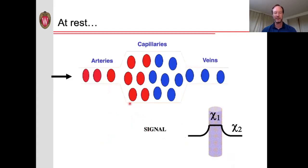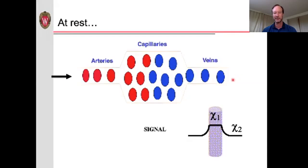For example, if we have a person lying at rest in the scanner, you can see that the blood flows in — indicated here with circles, red indicating oxygenated red blood cells and blue indicating deoxygenated red blood cells. The blood flows into the arteries, exchanges the oxygen in the capillaries, and then flows out through the veins. In the arteries, blood is mostly oxygenated, so we don't have very strong differences with the surrounding tissue. But in the capillaries and in the veins, we see this difference in magnetic susceptibility caused by the deoxygenated blood.